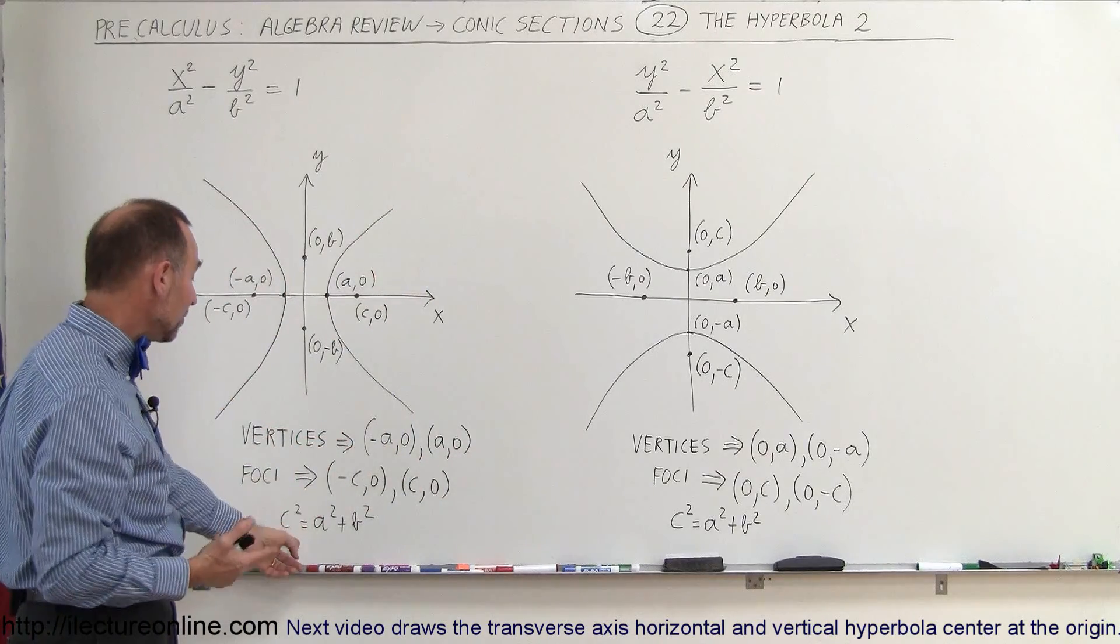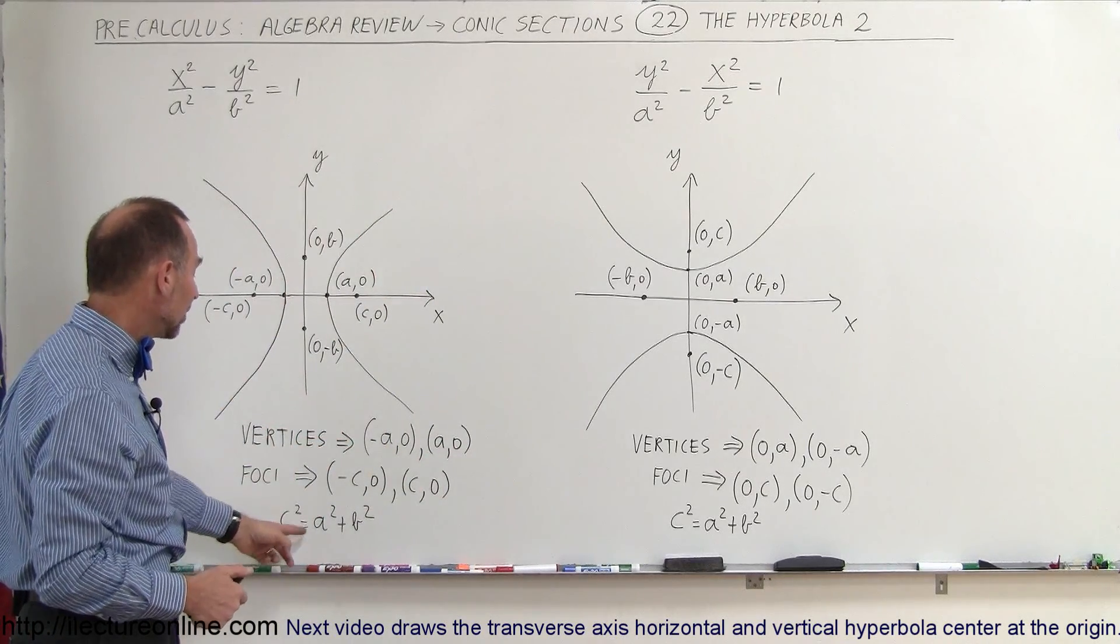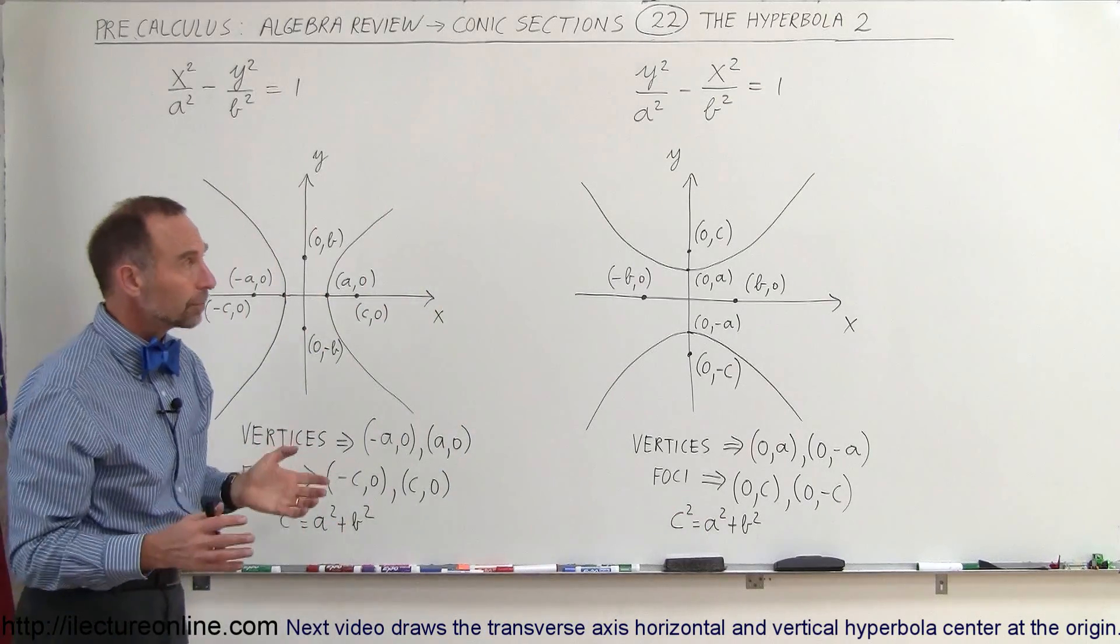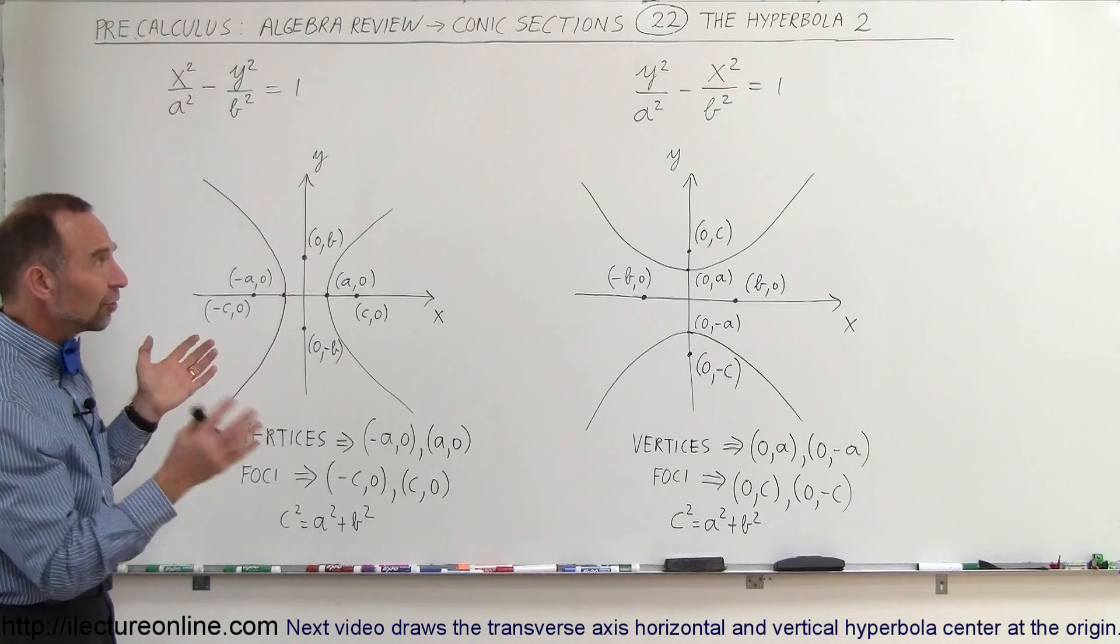In both cases, C can be found by writing that C squared equals A squared plus B squared in both cases. So that's the subtle difference between the two.